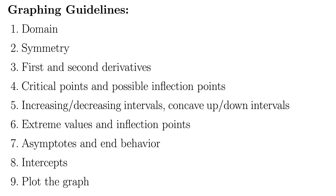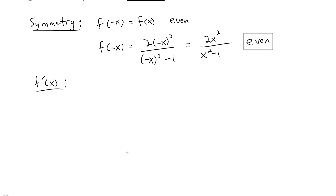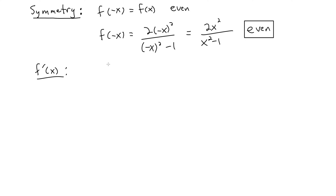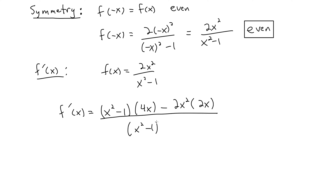Let's start with our first derivative. For our first derivative, it looks like we're going to need to use the quotient rule. Our original function is f of x equals 2x squared over x squared minus 1. Using the quotient rule — low d high — so x squared minus 1 times the derivative of the high, 4x, minus high 2x squared times d low, 2x, all over x squared minus 1 quantity squared.